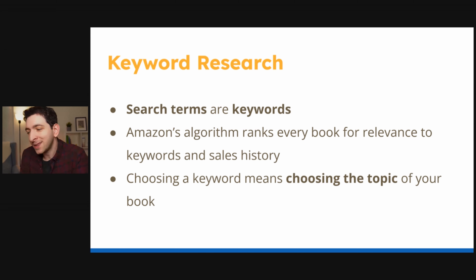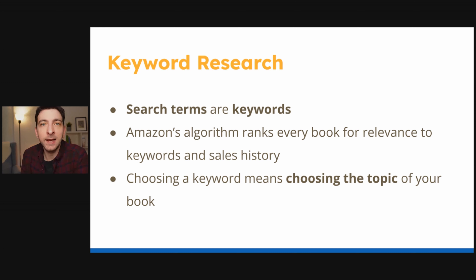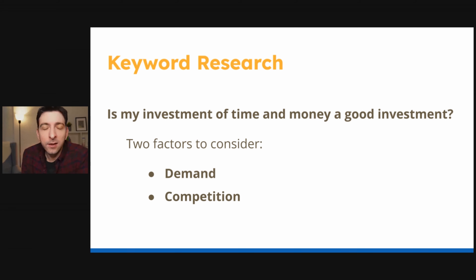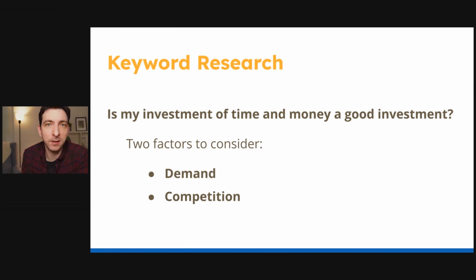Let's move on to keyword research. What is keyword research and why do we need it? When you look for something on Amazon, what you type in the search bar is a search term — for our purposes, we can simply call these keywords. The Amazon algorithm ranks every book for how relevant it is to that keyword along with other factors like sales history. Choosing a keyword means choosing the topic of your book, so that when someone searches that keyword, your book has the highest chance of showing up. There are two factors to consider: demand and competition. If no one is searching for your topic, no one will find your book — and if too many established books with high reviews already exist, your new book will struggle to compete.